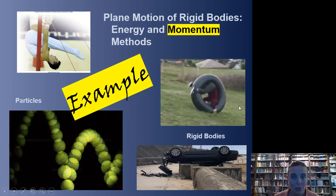Here is another example for momentum methods. This will be both linear and angular momentum, and we're doing this for rigid bodies, a three-dimensional body where different pieces have different velocities and accelerations.